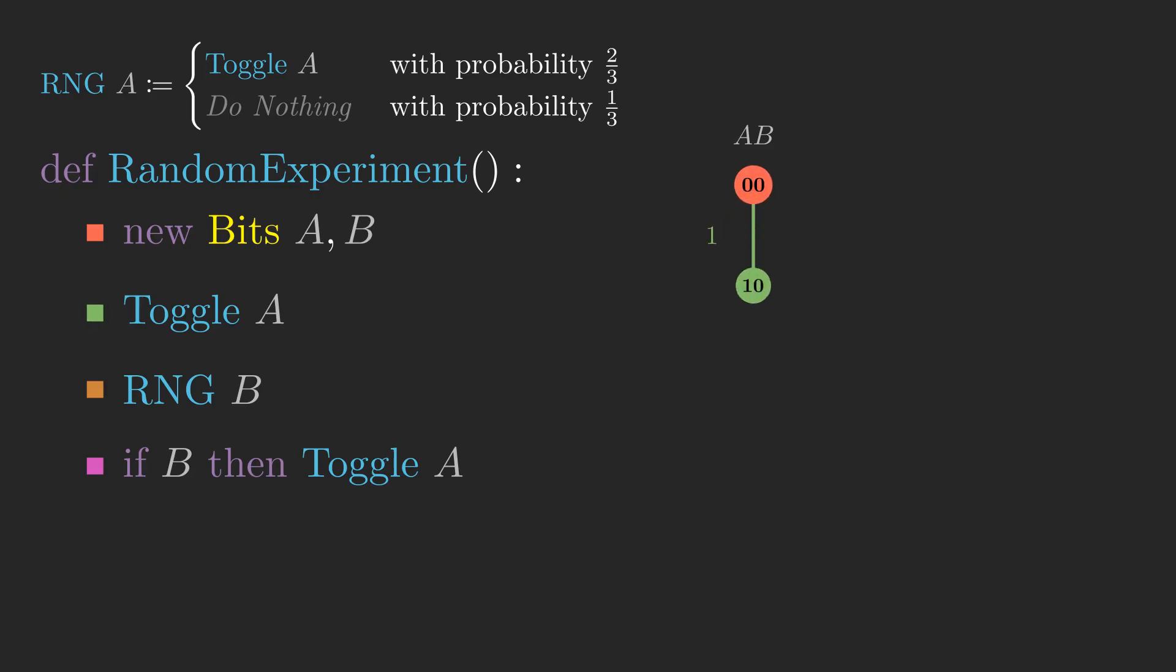First we create two new bits, A and B, both initialized to zero. Then we deterministically toggle A, which we can represent by a branch of the tree to the state with probability one. When we do RNG B, the universe splits into two branches, one where B is zero giving the state, and another where B is one giving the state. The first branch gets a probability of one-third, and the second gets a probability of two-thirds.